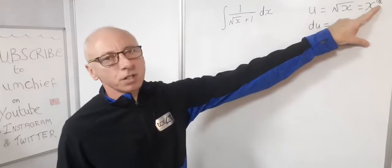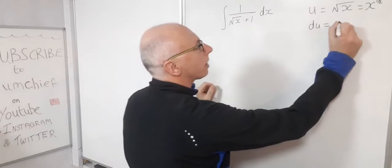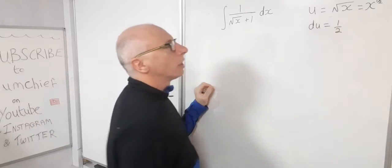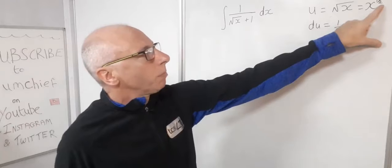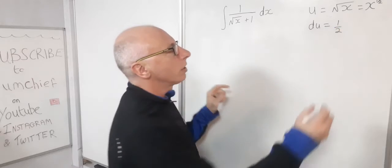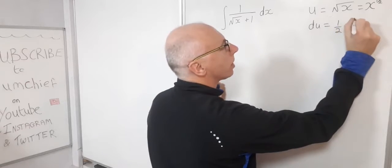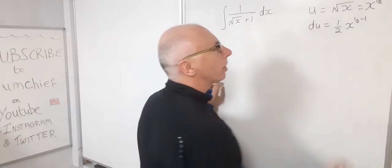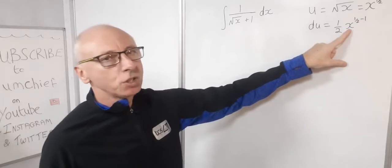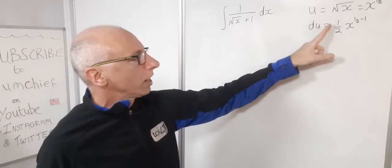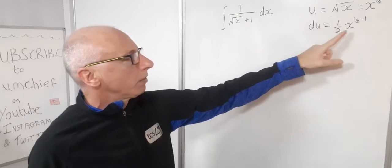So we multiply by the term in the indice there, so we've got one half, and then we drop the power by one. So we've got x to a half minus one, then obviously we need to take the derivative of x which is just one, which is not going to change anything.